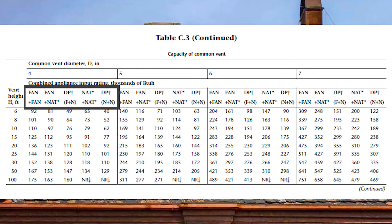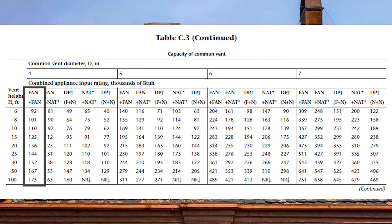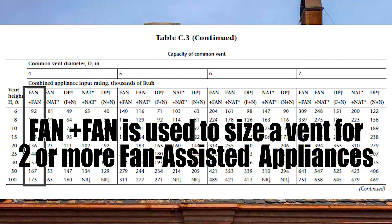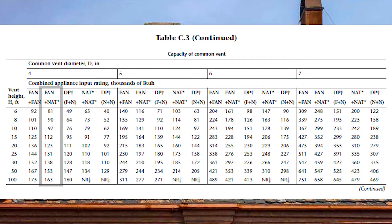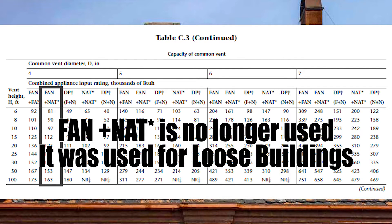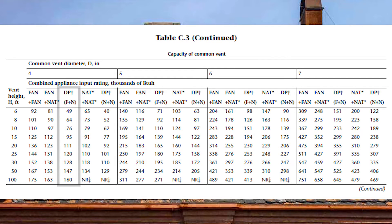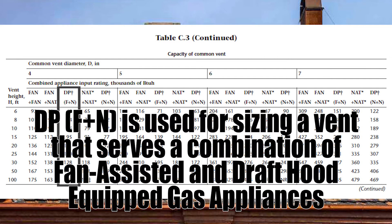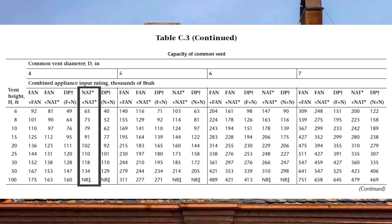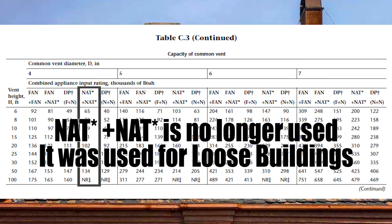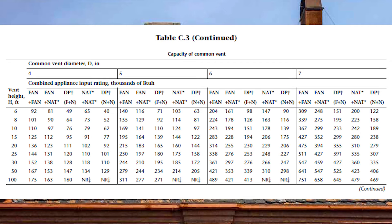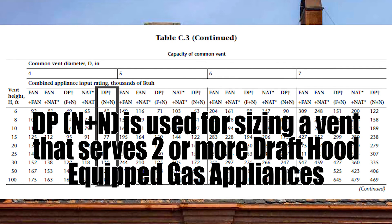Looking to the right we see five columns to identify. First is fan plus fan — use this if you have multiple fan-assisted appliances but no draft hood equipped appliances. Next is fan plus NAT with an asterisk, which we will never use as it is for a loose constructed building. Then DP F plus N: DP stands for depressurized or airtight building, F for fan assist, N for natural draft with draft hood — use this column when combining fan-assisted and draft hood appliances. Next is NAT plus NAT, both with asterisks — never use this, also for a loose constructed building. Finally, DP N plus N is for a depressurized or airtight building with two or more draft hood equipped appliances.